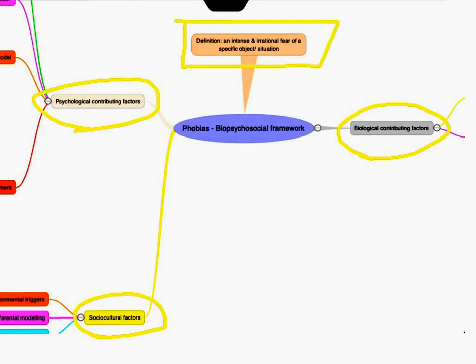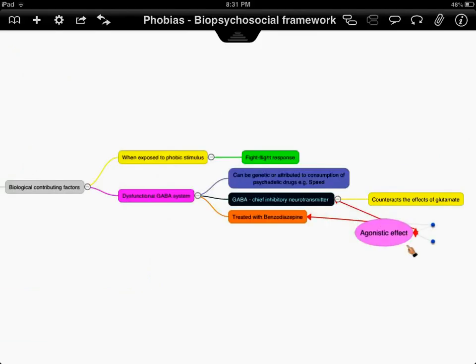So let's look at biological contributing factors to the development of a phobia. When we're exposed to our phobic stimulus, there's a physiological response. The fight-flight response is activated. The HPA axis will lead to increase in adrenaline levels. Our heart rate will go up. Blood pressure will increase. GSR will increase.